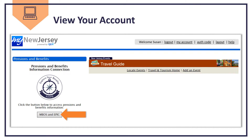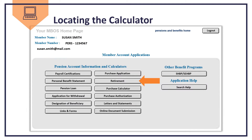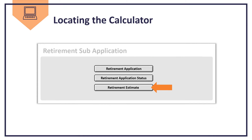On your My New Jersey home page, click the MBOS and EPIC button. From your MBOS home page, click the Retirement button. Next, click Retirement Estimate.